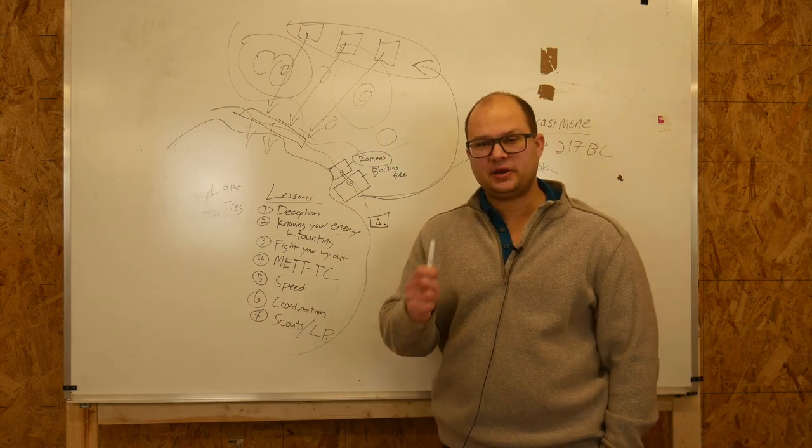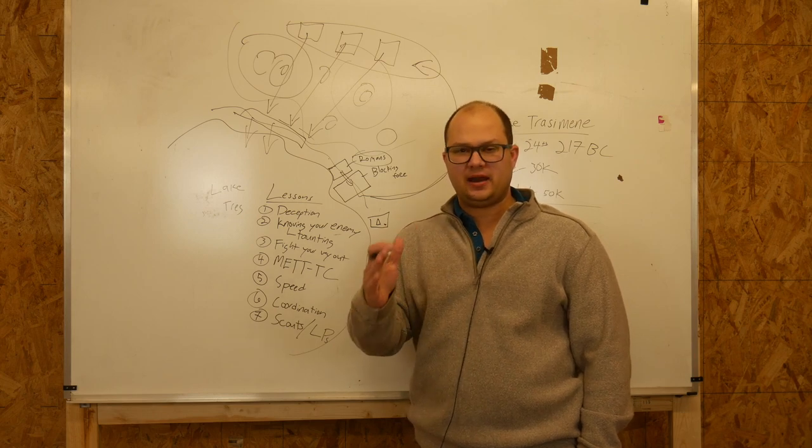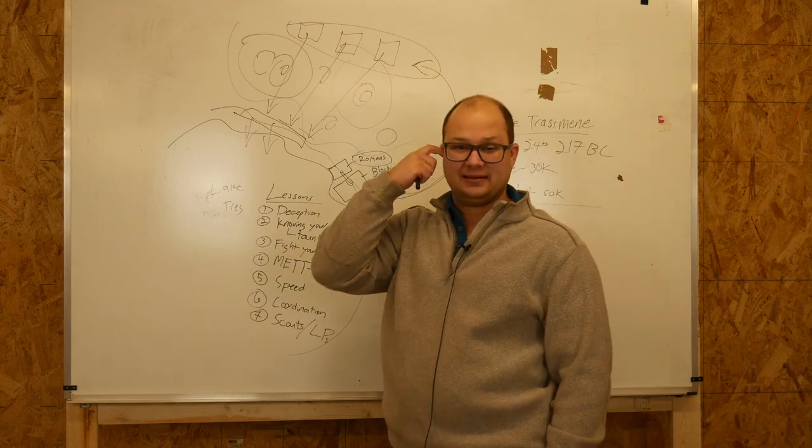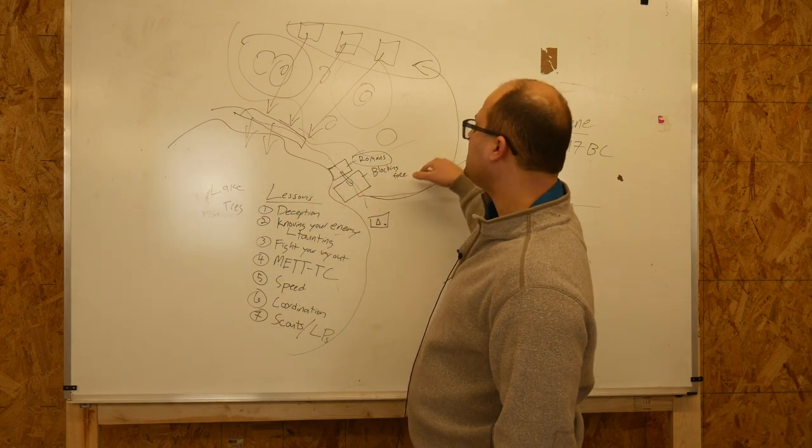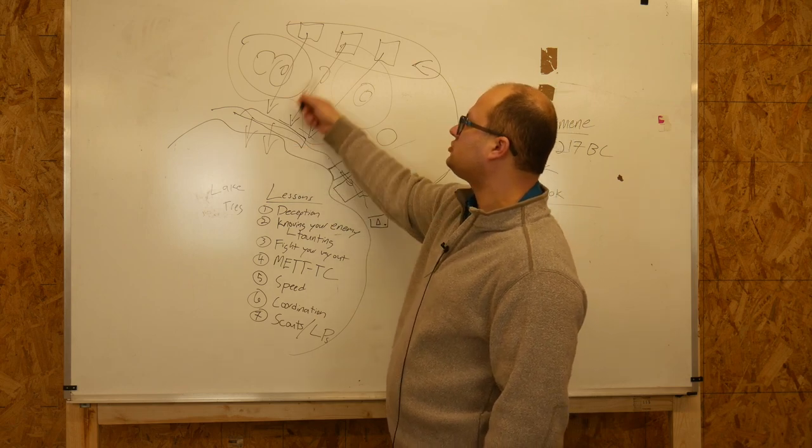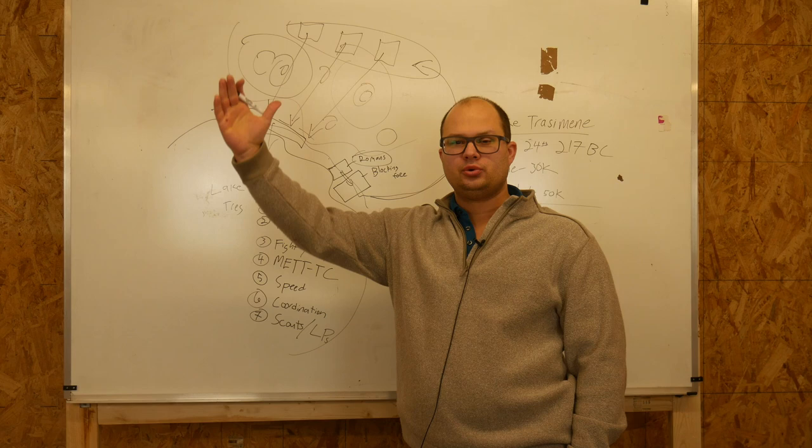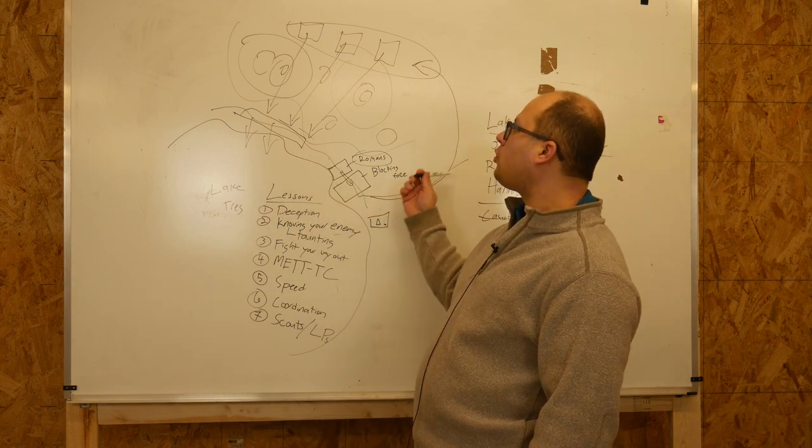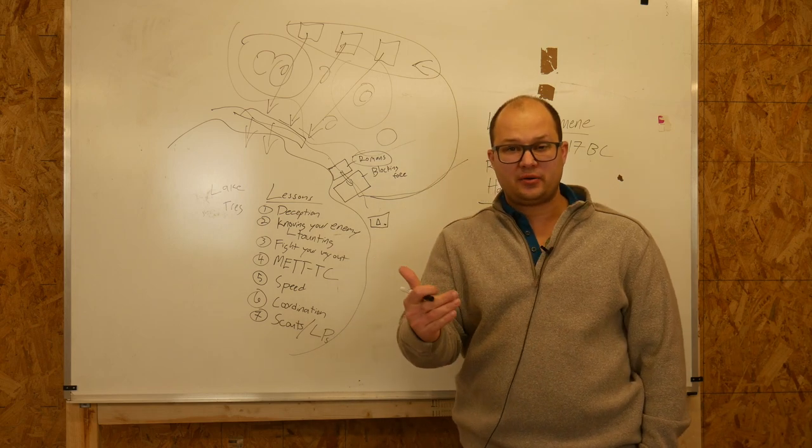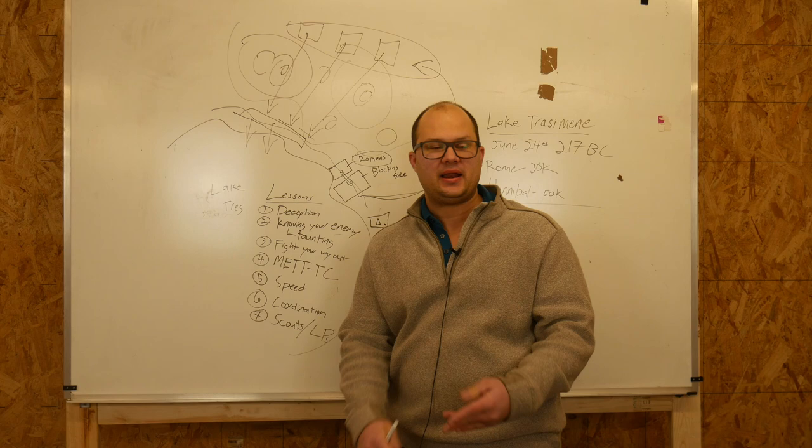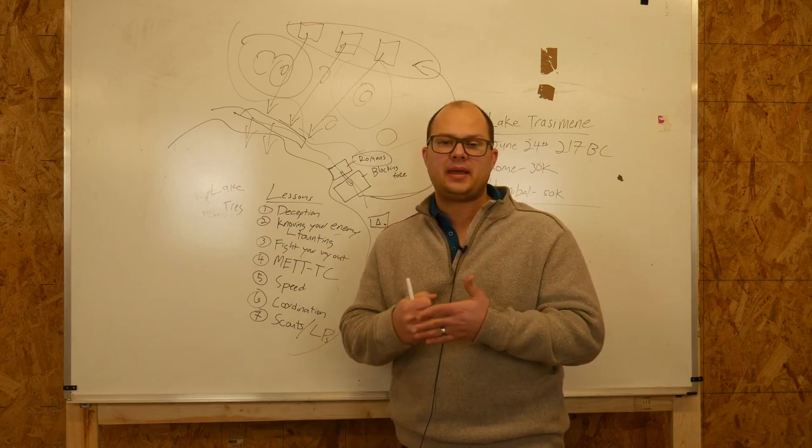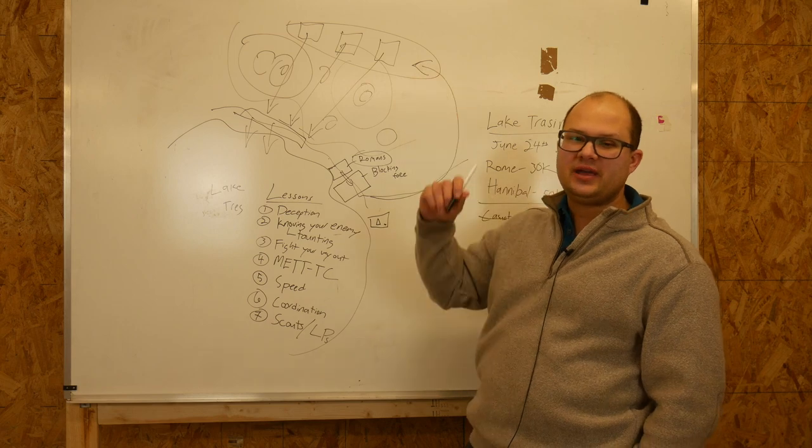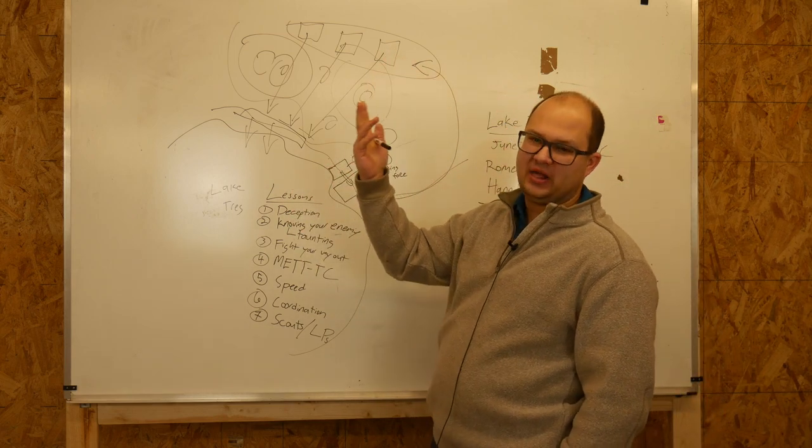Number five, speed. I bring speed up because we're going to define it as moving faster than the enemy or moving faster than the enemy anticipates you being able to. I bring that up because, remember, Hannibal set this up at night. The night before, he knew he was being pursued. He sent his guys all the way around here up into the hills. Why didn't he just send them straight up into the hills? Well, because then you'd track all through the terrain. If you're moving tens of thousands of people up through these hills, that's going to be pretty noticeable the next day. So he sent them around and set up his ambush. Something that was very quickly done that if you're the Romans, you may not even be able to anticipate. Hey, we're hot on their trail, they're running. They're not going to be able to ambush us because we're moving too fast.